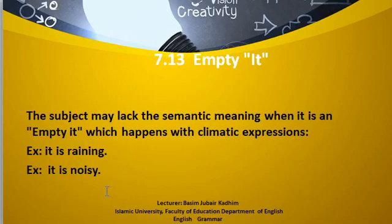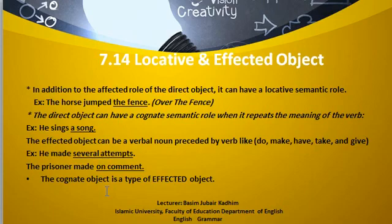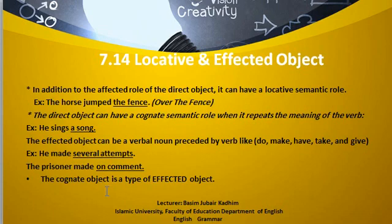The empty it occurs with climatic expressions: 'it is raining,' 'it is noisy,' 'it is cold,' 'it is hot,' and so on. As for the locative and the affected object, the object is either locative or affected. In addition to the affected role of the direct object, which is the typical role, it can have a locative semantic role. For example, 'the horse jumped the fence,' meaning over the fence. Here, the fence is the object — what semantic role does it have? The semantic role of the fence is locative, just like the subject; however, it occurs in the object position, so we call it locative object.